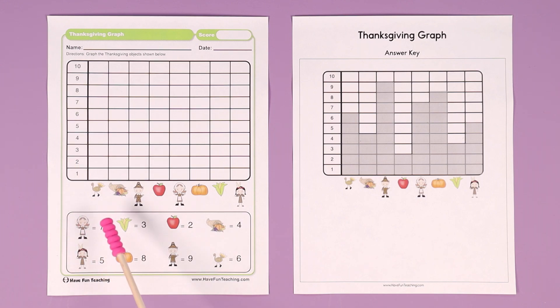Turkey, cornucopia, you have some different things, different objects. And all the students have to do is look at the bottom, find the picture. So the first one is a turkey. Find the turkey. There's the turkey. Gobble, gobble. And it equals six. There were six turkeys.